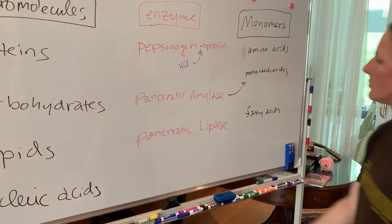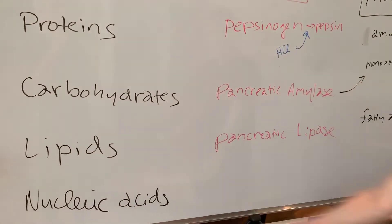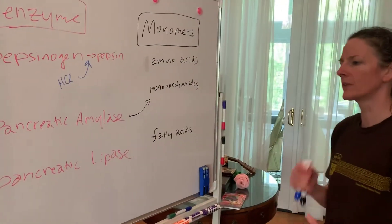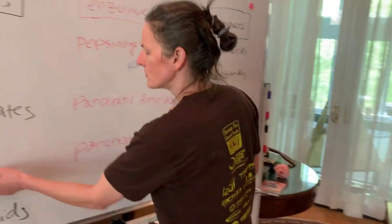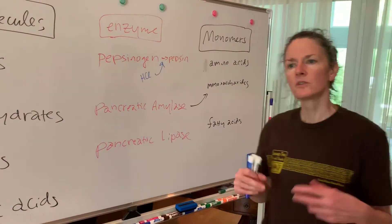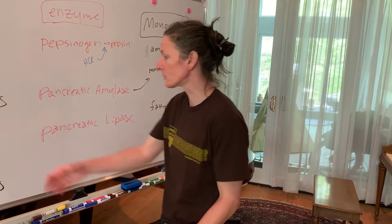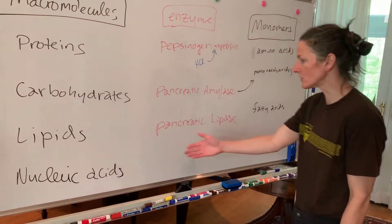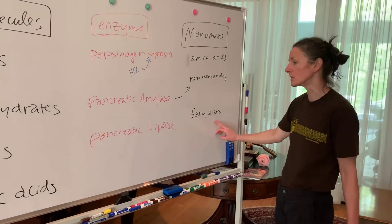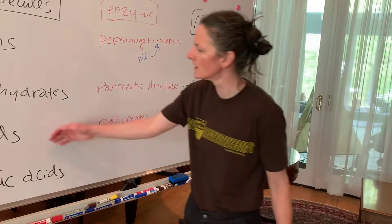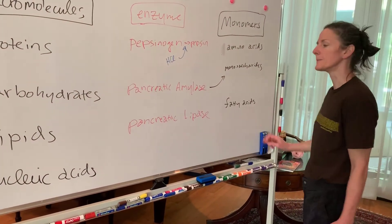For lipids, we're going to use pancreatic lipase to turn triglycerides into fatty acids. Triglycerides — think of milk or cream — are slightly basic. When we pull the fatty acids off, we get carboxylic acids, so we're converting something slightly basic into something acidic.